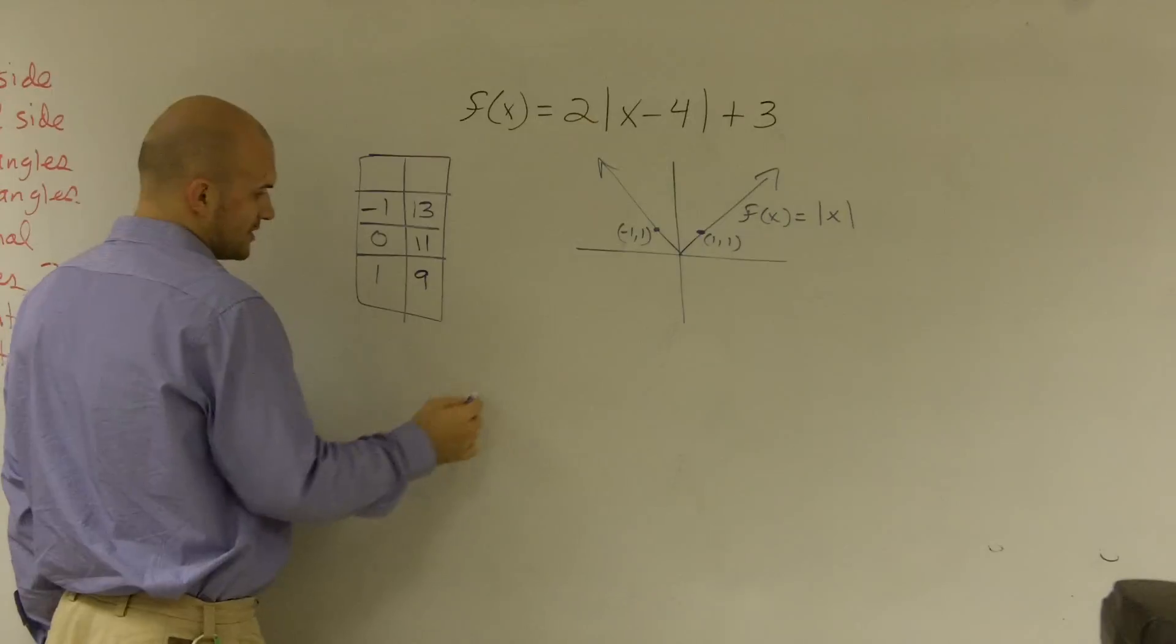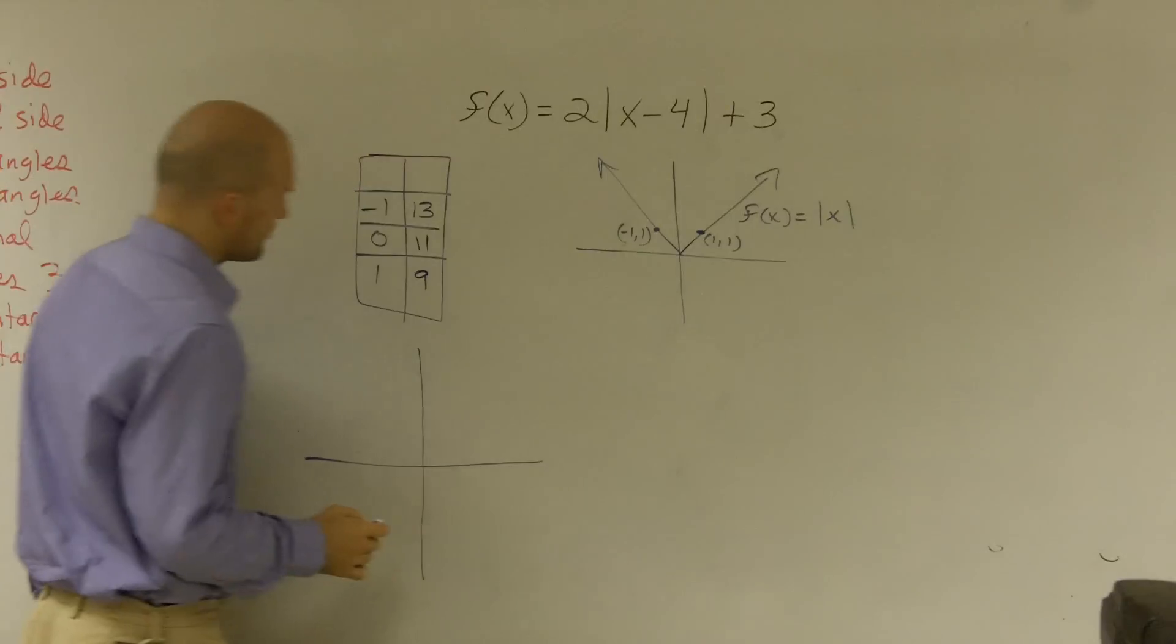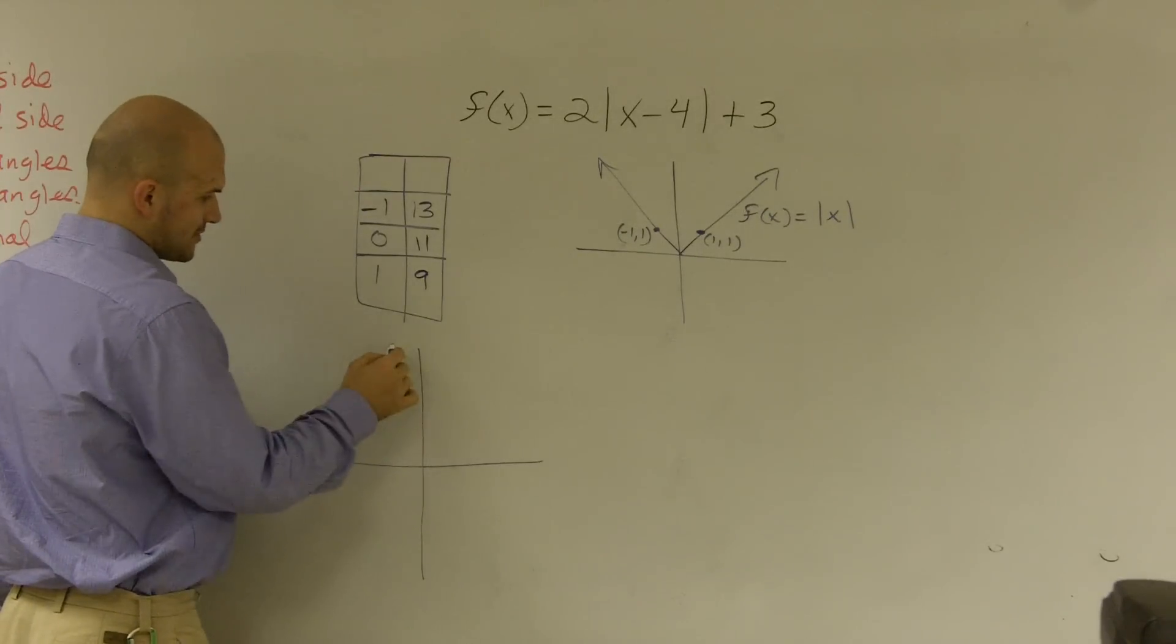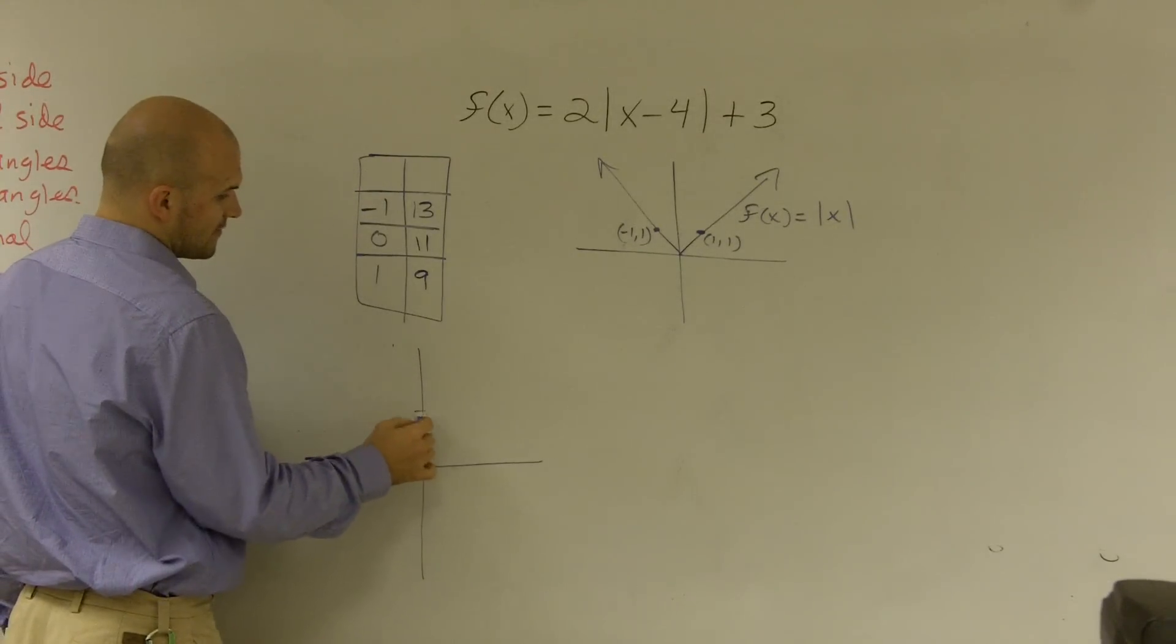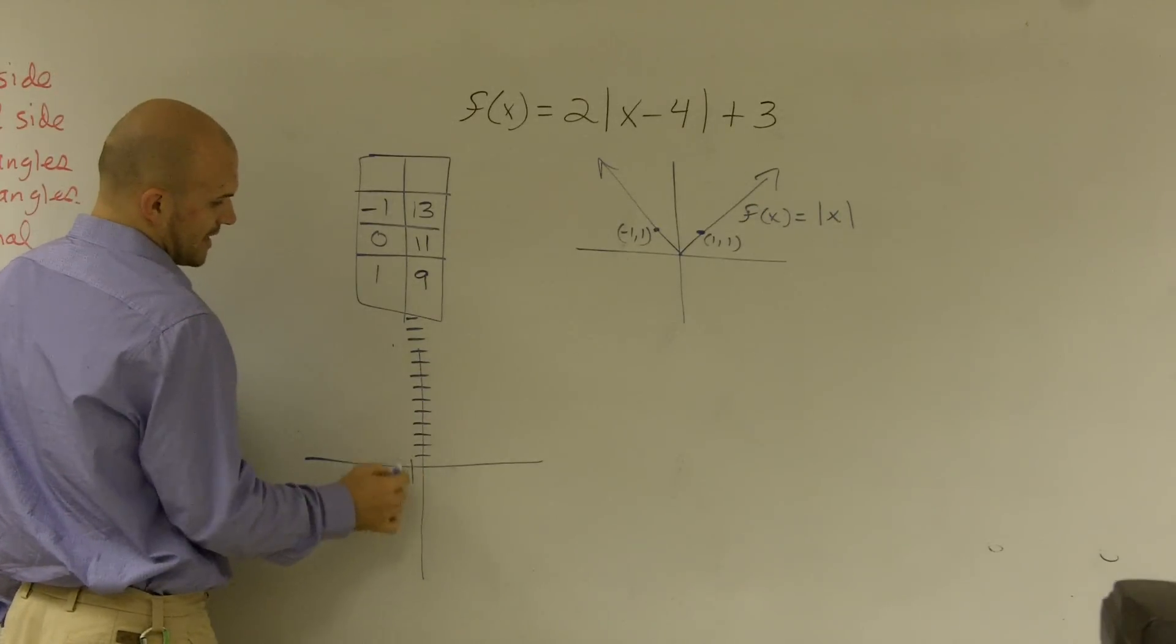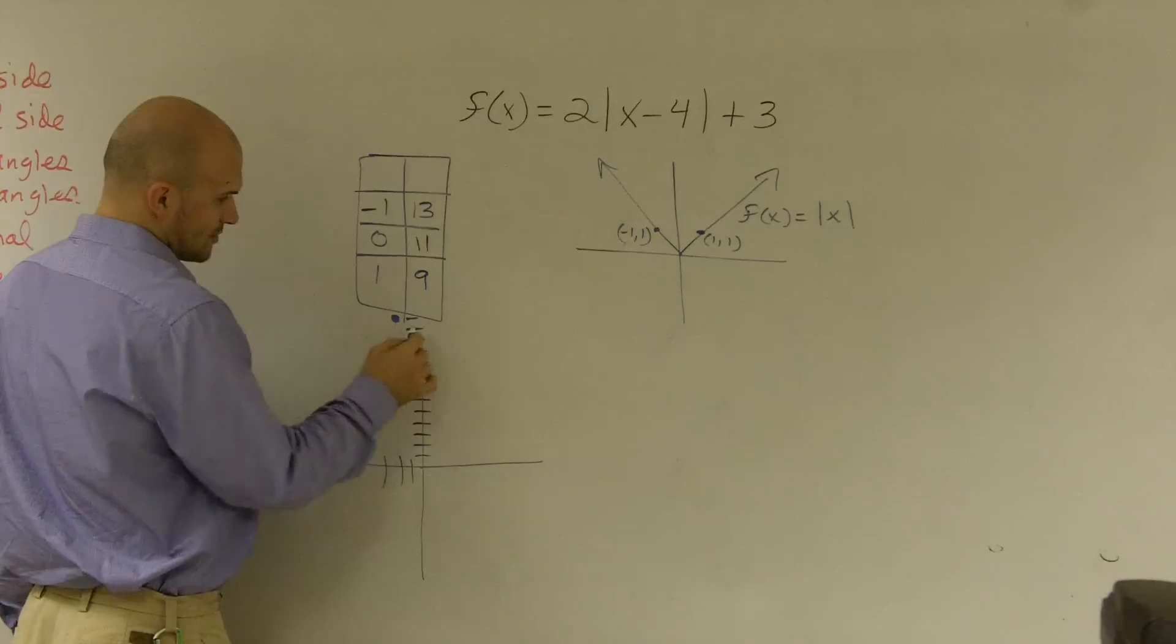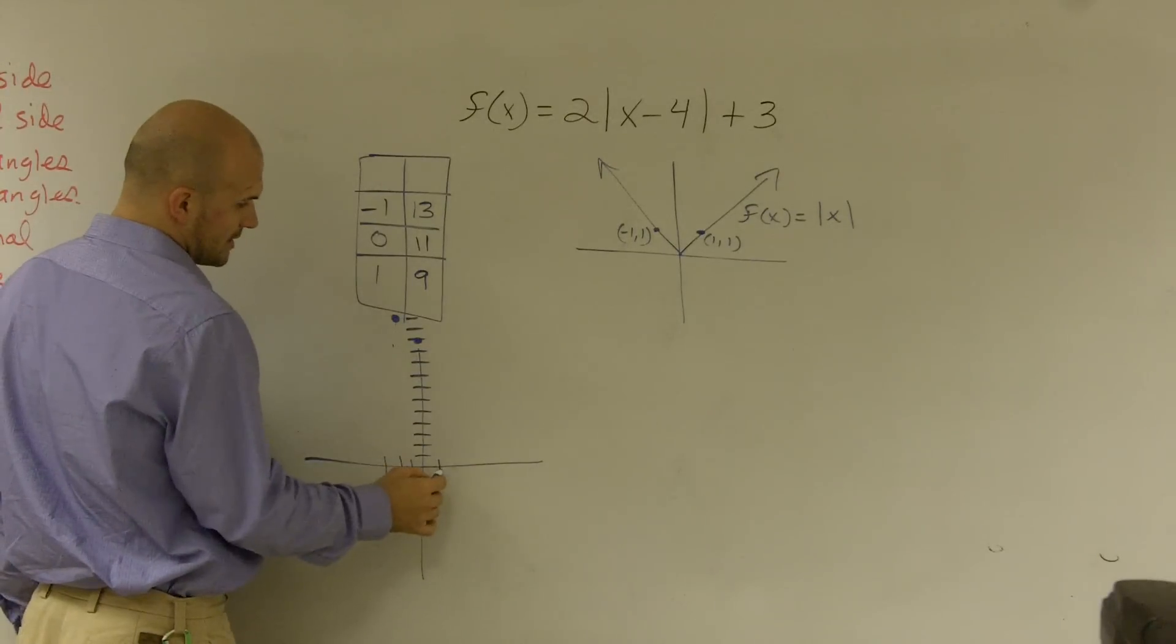So if I was to graph this equation, or if I was to graph this, I come up with a problem, because negative 1 goes up to 13. Let's see, 1, 2, 3, 4, 5, 6, 7, 8, 9, 10, 11, 11. So negative 1 goes up to negative 13, 0 goes to 11, and 1 goes to 9.